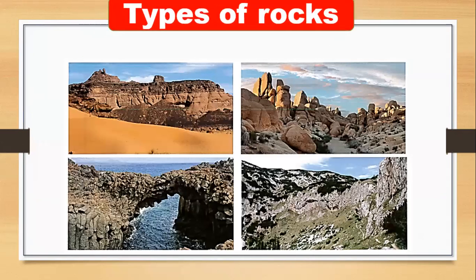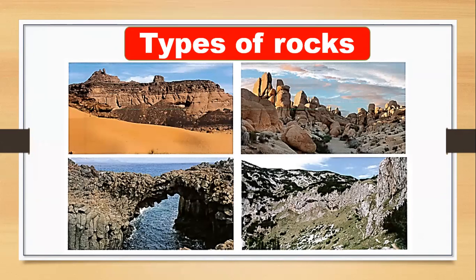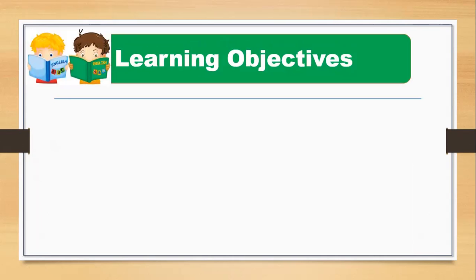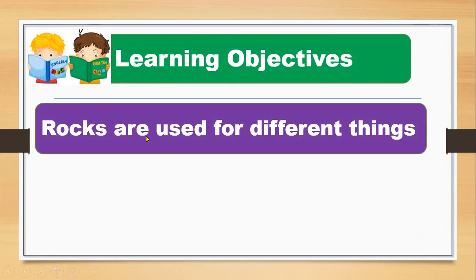In our last lesson, lesson number one, we studied about types of rocks. The first ones are sandstone, granite, and limestone. Some rocks are very soft and some rocks are very hard, and they have different shapes, sizes, and colors. We can use granite in buildings because it is very strong and hard.